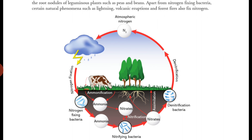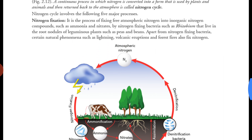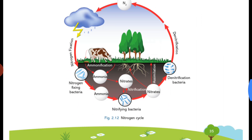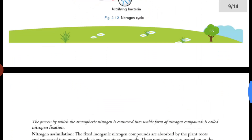In the figure, you can see free nitrogen at the top being converted through lightning or through nitrogen-fixing bacteria into ammonia and nitrates. The left portion of the figure illustrates nitrogen fixation — the first process of the nitrogen cycle. Now let's move to the next process.